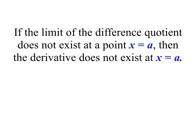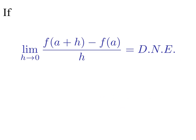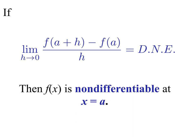Now let's consider what happens if the limit of the difference quotient does not exist at a point x = a. Then the derivative does not exist at that point either, and we say that f(x) is non-differentiable at x = a. Mathematically, if the limit as h goes to zero of [f(a+h) - f(a)] / h does not exist, then f(x) is non-differentiable at x = a. So there are some points for functions where you cannot find the derivative, determined by whether that limit of the difference quotient exists.